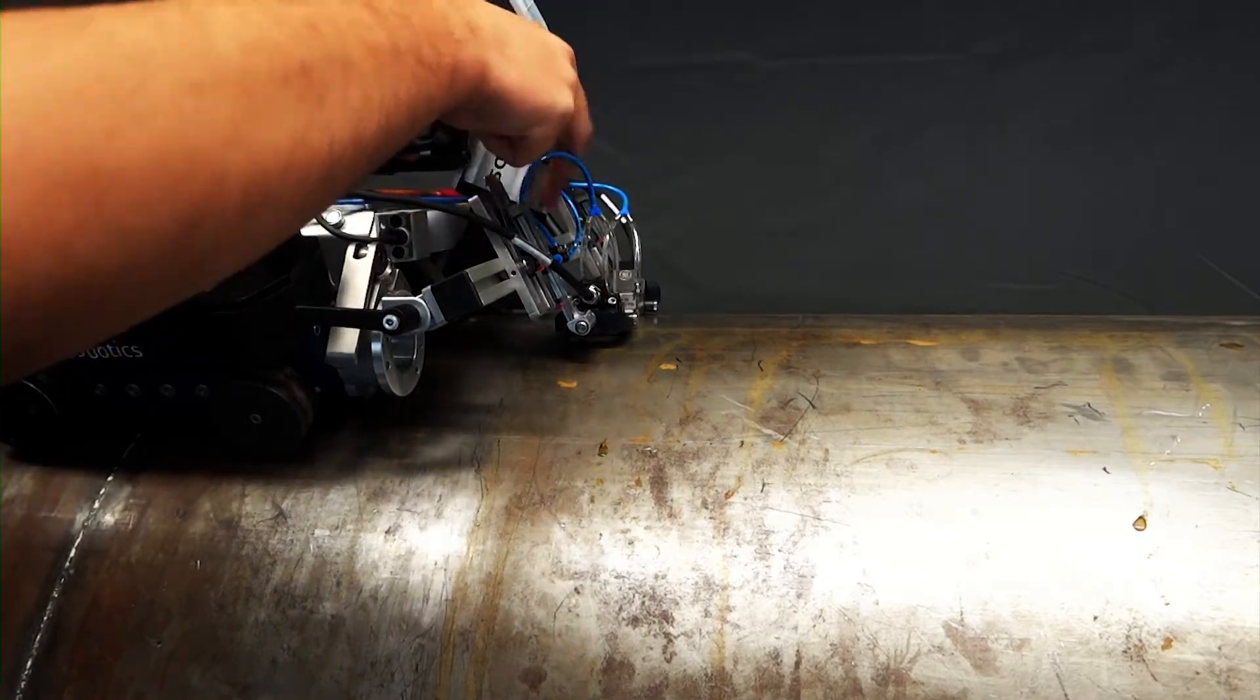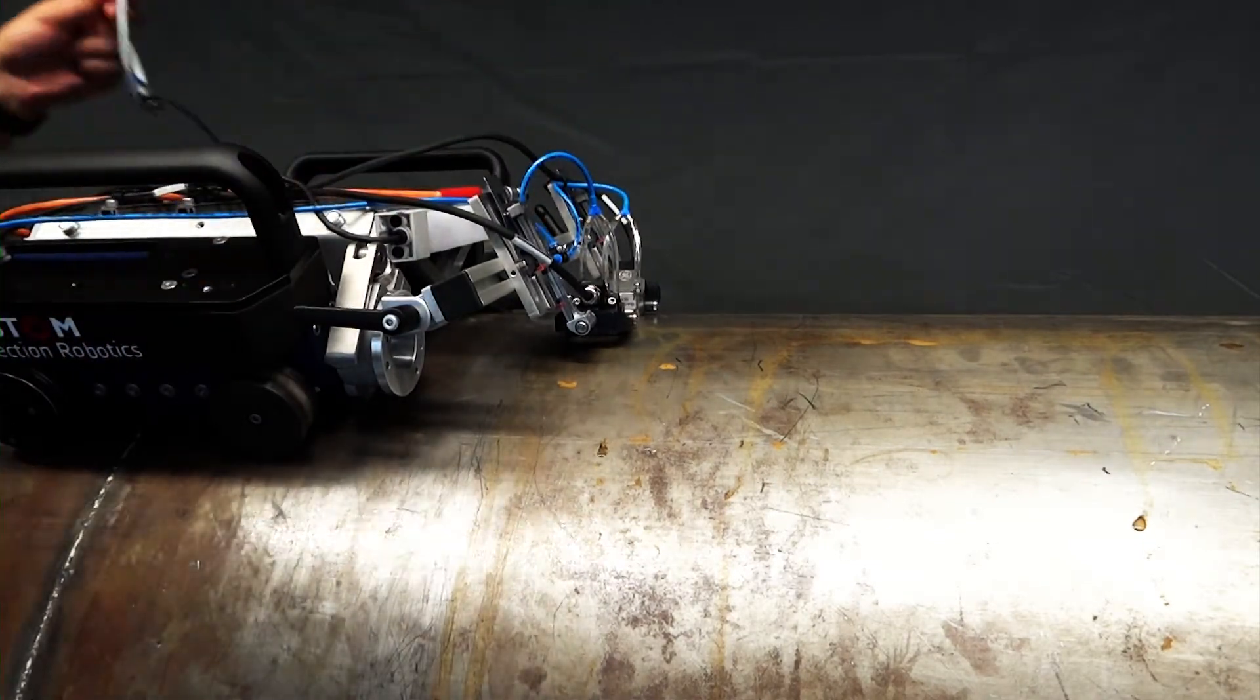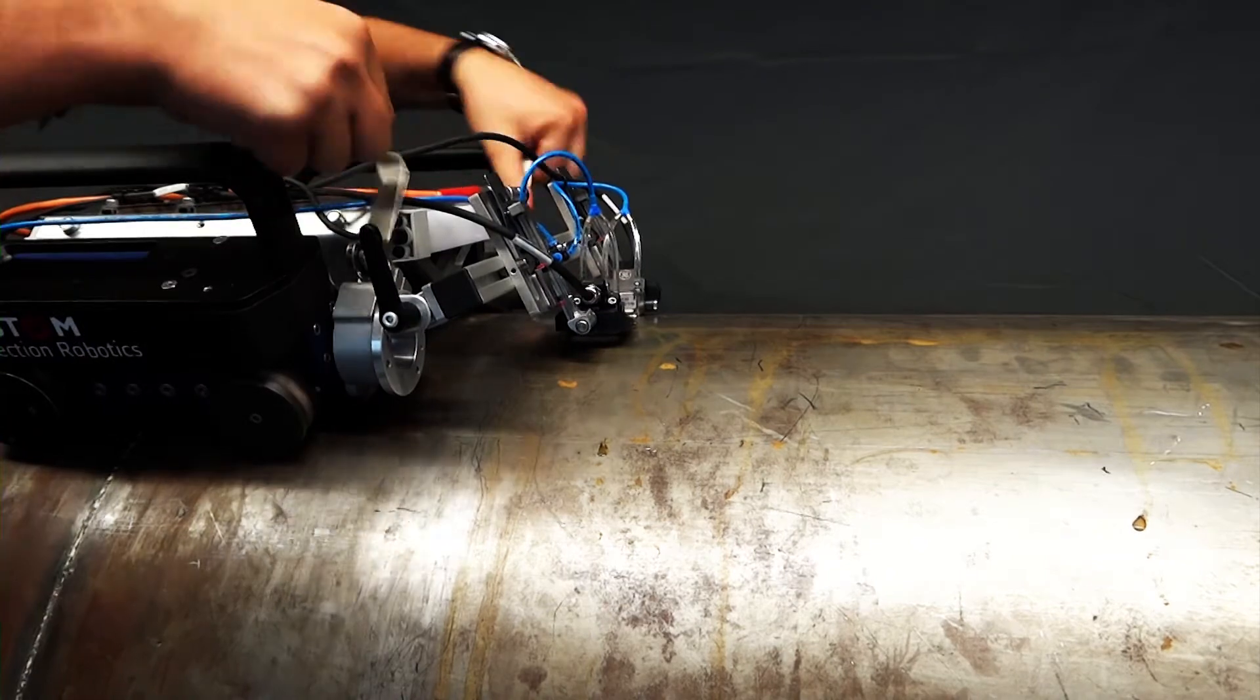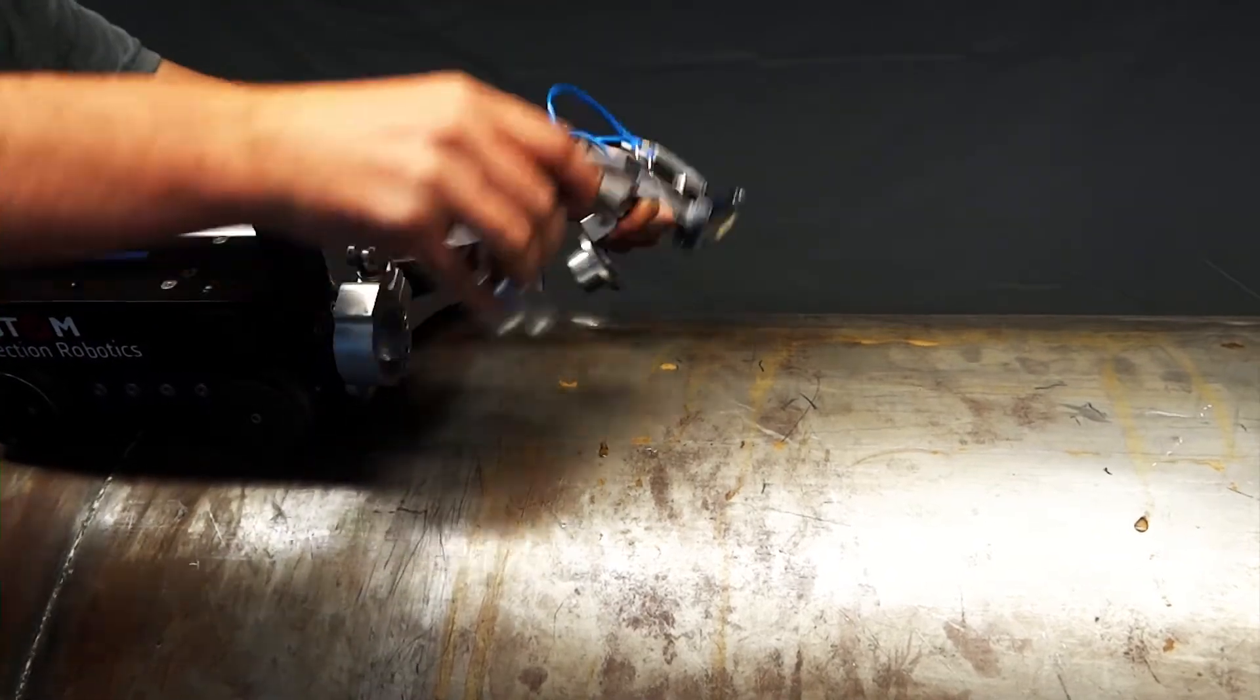To change from weld inspection using the weld following module, the operator simply unmounts the camera and phased array probe holders.